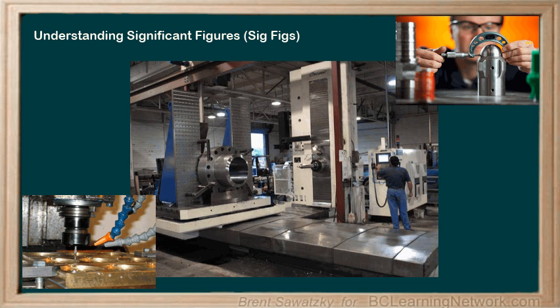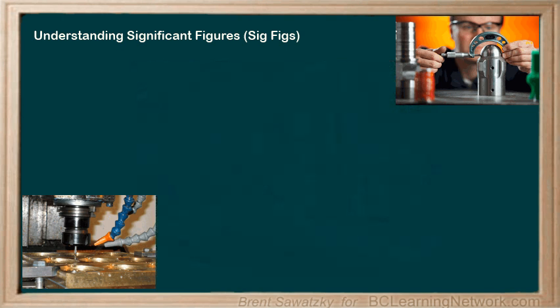In many cases, communicating the uncertainty of a measurement is very important. Say a machine shop is providing a quote for machining a particular part. What would be the difference if the plan they received said the part had to be twenty centimeters wide, or twenty point zero centimeters wide, or twenty point zero zero zero centimeters wide? They're all the exact same measurement, but if you were pricing the production of these parts you'd price the three plans quite differently.